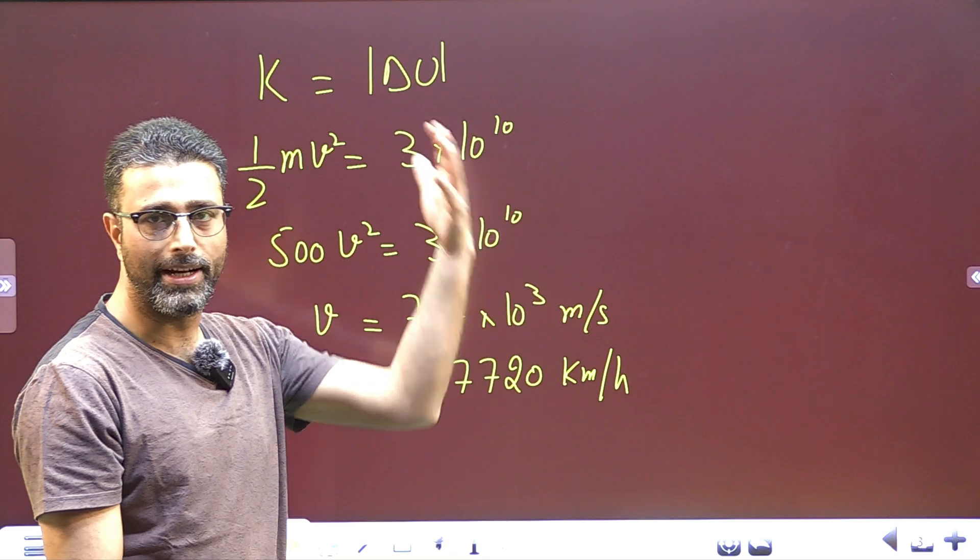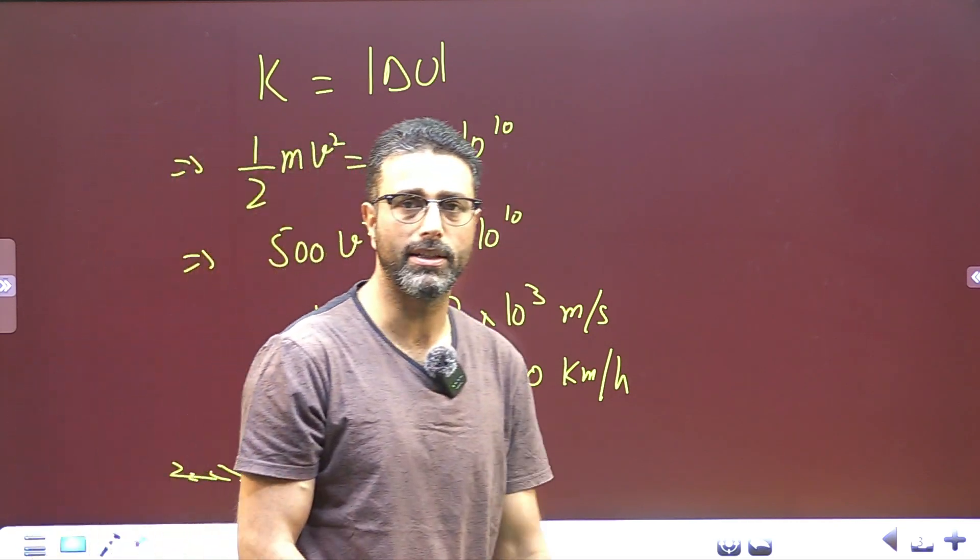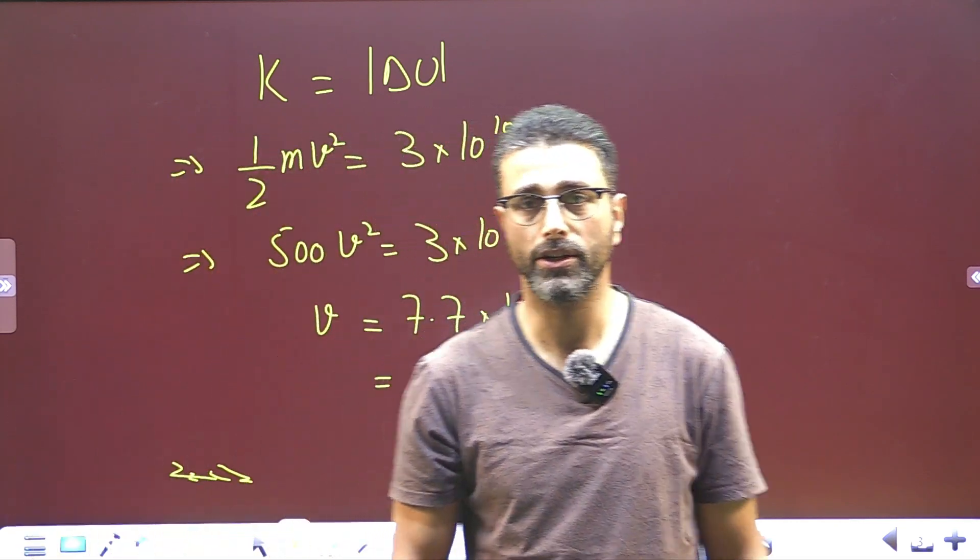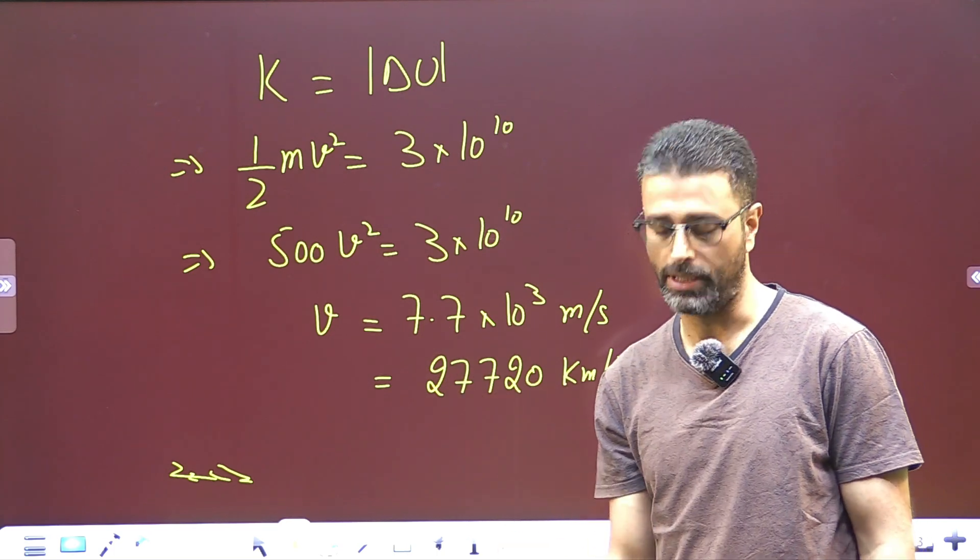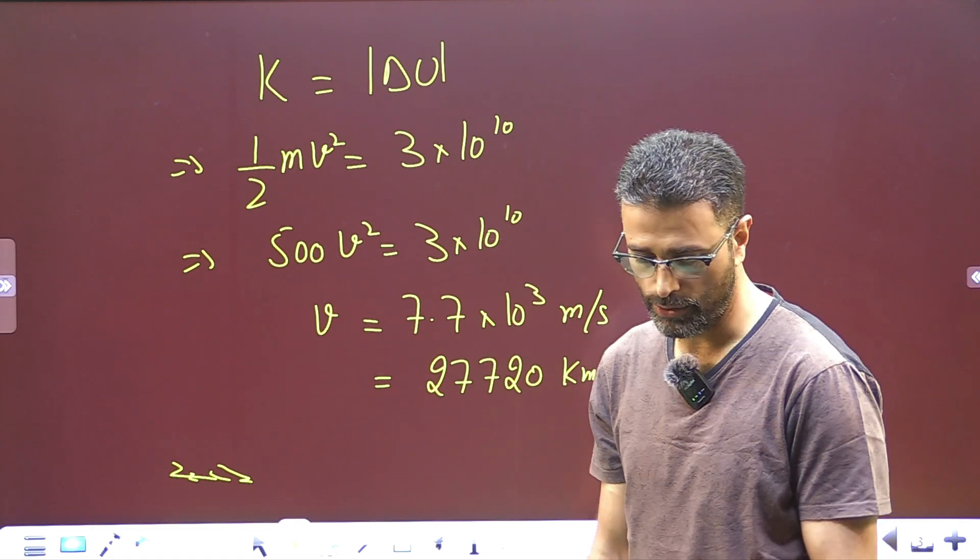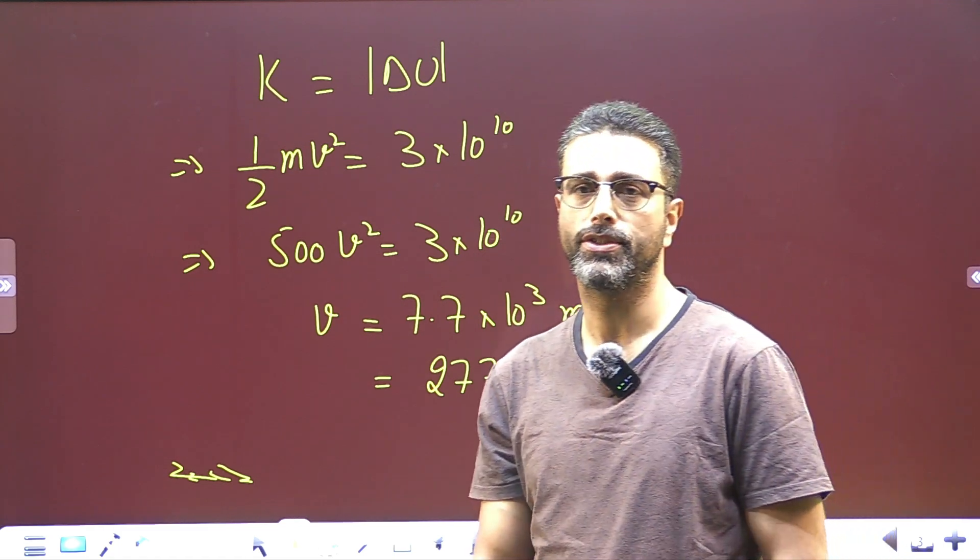That is huge. So, the energy transferred between the cloud and the ground is huge, lots of energy, 27,720 kilometer per hour. So, this is what we are asking you to find out in this problem, that will do for this session.